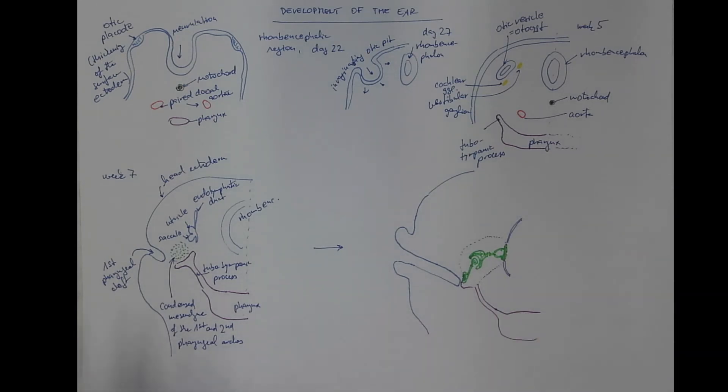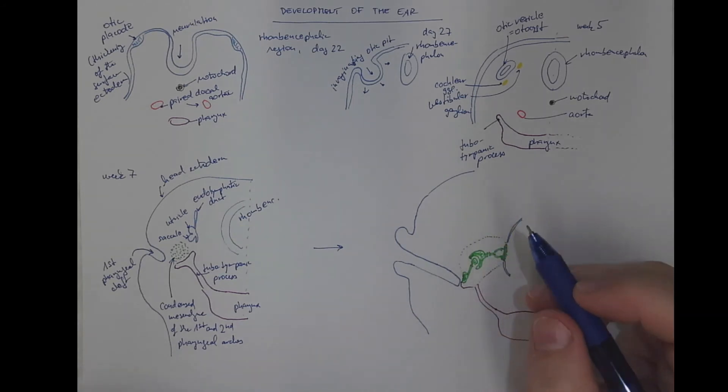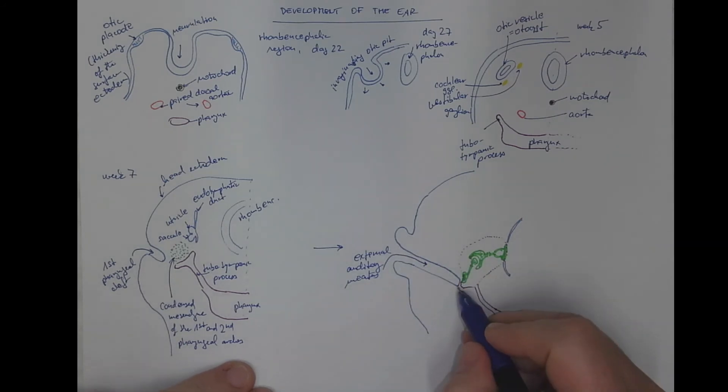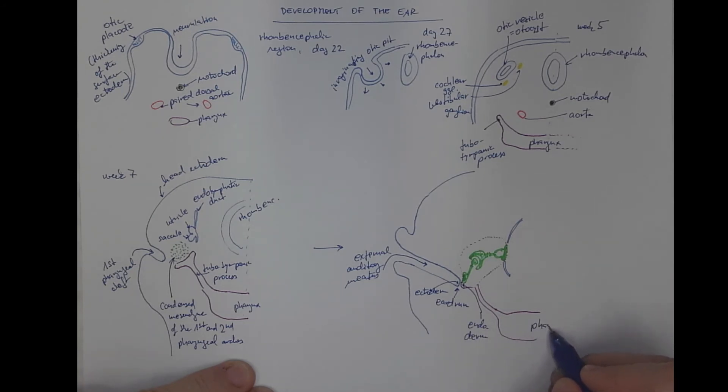And the stapes fits the oval window of the membranous labyrinth of the inner ear. So let's label the structures. This will be the external auditory meatus, which ends with the eardrum. So from outside, the eardrum is lined with the ectoderm. From the inner side, there is this endoderm. Why? Because it's the pharynx, the epithelium from the pharynx that is lining also the auditory tube and the tympanic cavity.